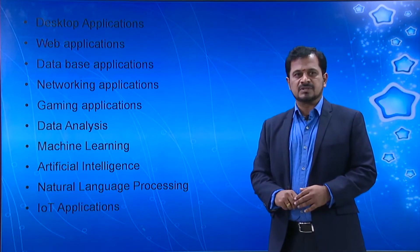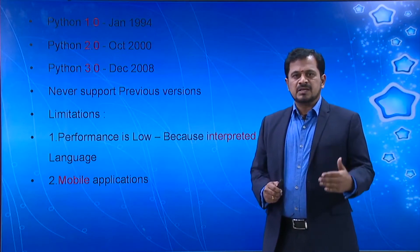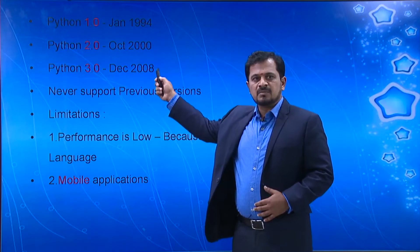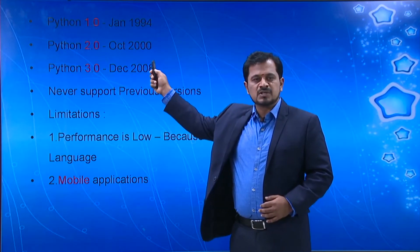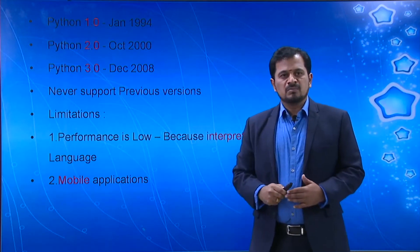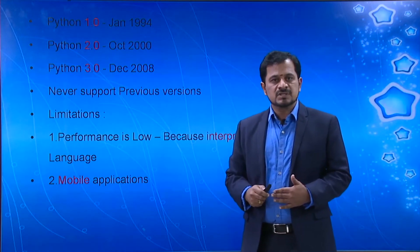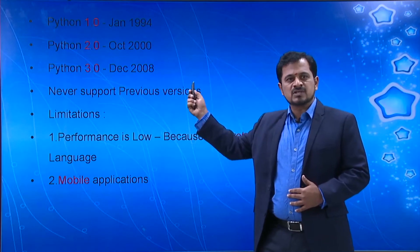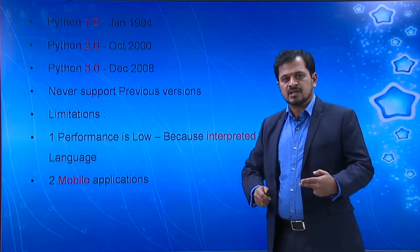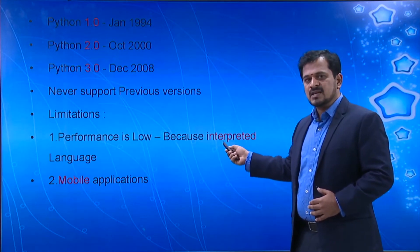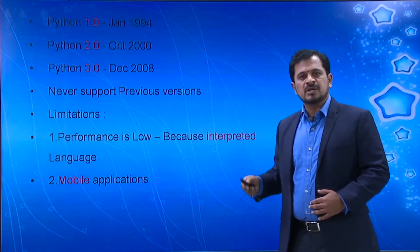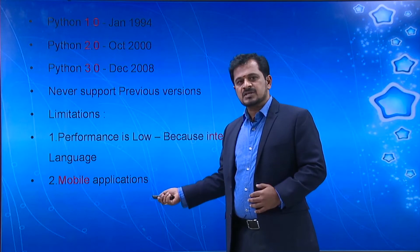Next, let's look at the different versions of Python. Starting from 1991, there are three versions: Python version 1 introduced in January 1994, Python version 2 in October 2000, and Python version 3 in December 2008. An important point is that Python 3 does not support features from Python 2 or Python 1 — there is no backward compatibility. The two limitations of Python are: first, performance is slightly low because it is an interpreted language with no compilation step; and second, it is not as suitable for mobile application development.